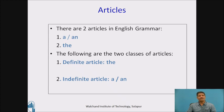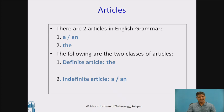As you can look into the slide, we have articles and these articles can be grouped or classified into two categories. The first class is called the definite article, and we have 'the' in this category. The second category is the indefinite article, and in this class we have 'a' or 'an'.